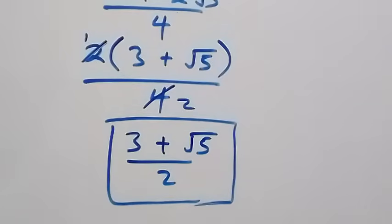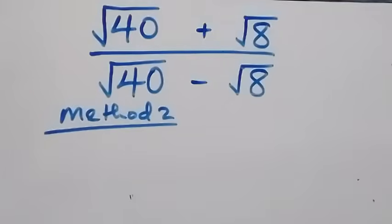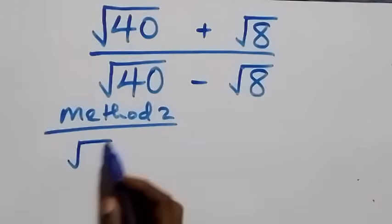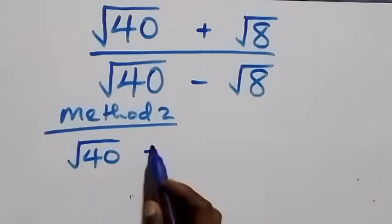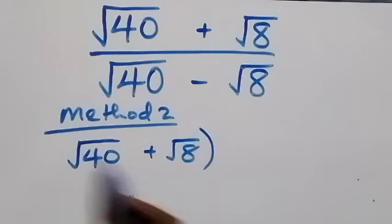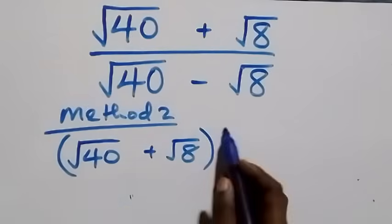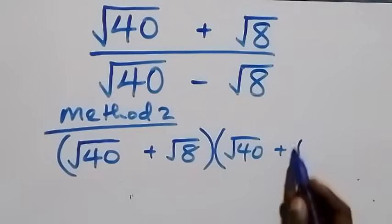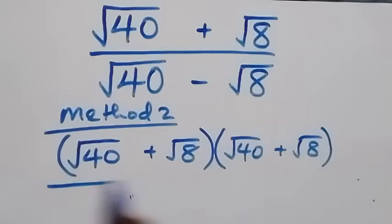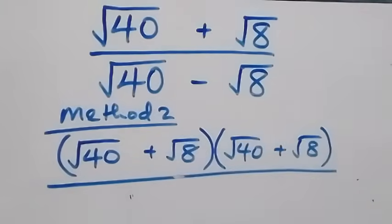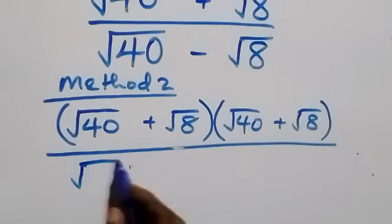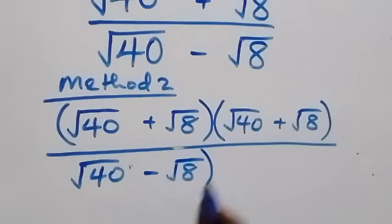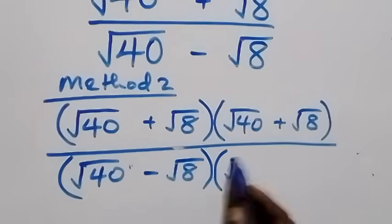Now let's use the second method. From what we have here, we can rationalize directly. The numerator becomes root 40 plus root 8, and we multiply by root 40 plus root 8 over root 40 minus root 8.